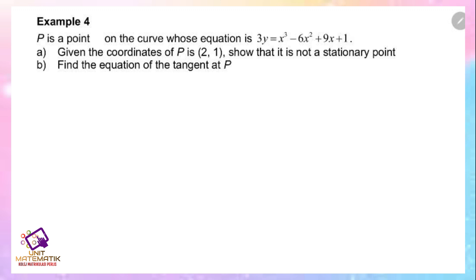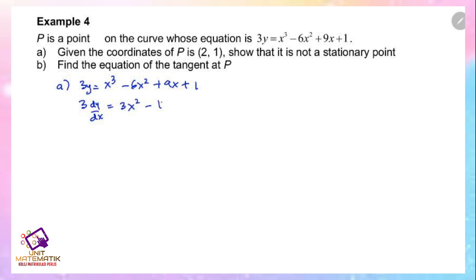We use the curve to find the derivative. The curve is 3y equals x cubed minus 6x squared plus 9x plus 1. We use implicit differentiation to get the value of dy/dx. Differentiating each term: 3 dy/dx equals 3x squared minus 12x plus 9.